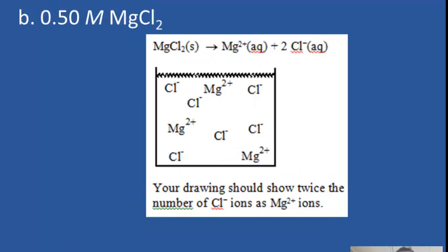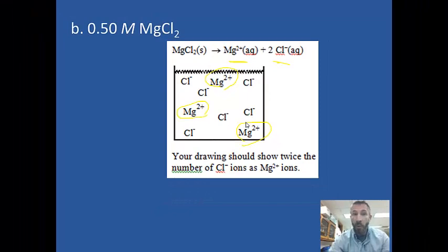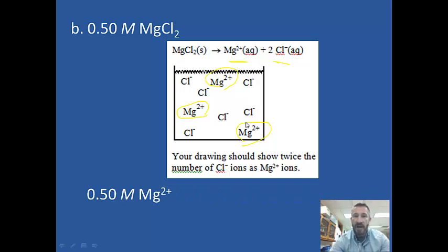Next, 0.5 molar magnesium chloride. When magnesium chloride splits up, you get 1 magnesium and 2 chloride. So in your drawing, for every magnesium drawn — say 3 magnesiums — there should be twice as many chlorides, so 6 chlorides. The concentration of magnesium is 0.5 molar, the same as the solution. But the concentration of chloride ion is double that: 1.0 molar chloride ions.